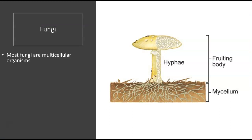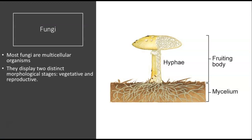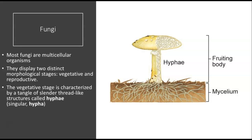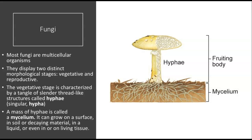Most fungi are multicellular organisms. They display two distinctive morphological stages: the vegetative stage and the reproductive stage. The vegetative stage is characterized by a tangle of slender thread-like structures called hyphae — the singular is hypha — and a mass of hyphae is called the mycelium. It can grow on a surface, in soil, in decaying material, in liquid, or even in or on living tissue. The bundled mycelium forms the fruiting body of the fungus.